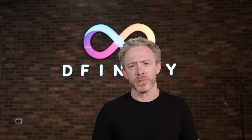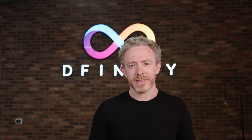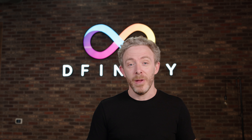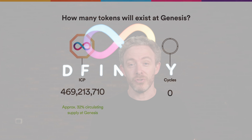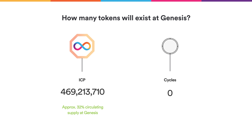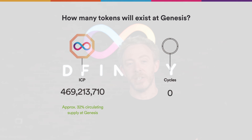But how many of these tokens will exist at Genesis? Well, there will be 469,213,710 ICP with about 32% circulating and liquid. There won't be any Cycles because you need ICP to create them and they won't be available until Genesis.